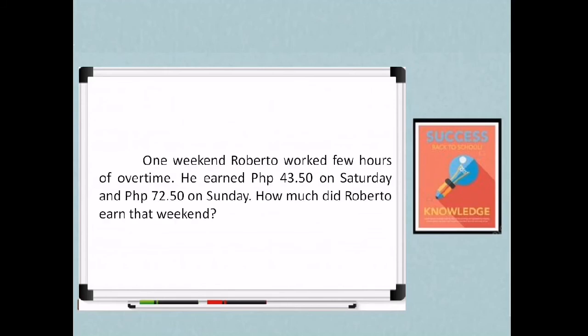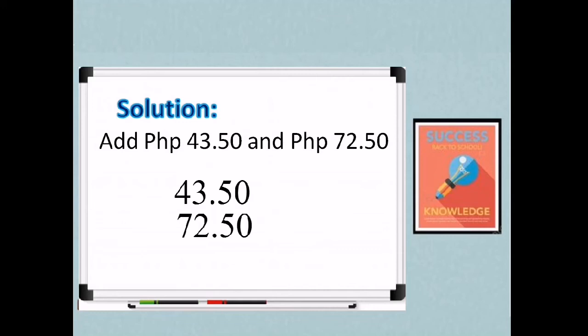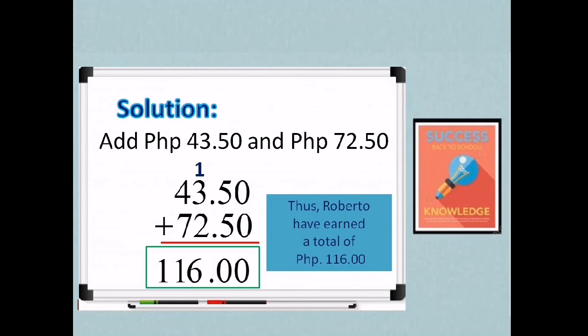So going back to our problem. So how are we going to solve it? So for our solution, we just add 43 pesos and 50 centavos and 72 pesos and 50 centavos. So mag-start tayo sa right to left. So 0 plus 0 is 0. Then 5 plus 5 is 10. So carry 1. Then 3 plus 2 is 5 plus 1 is 6. Then 4 plus 7, you have 11. So you have 116. Thus, Roberto have earned a total of 116 pesos.